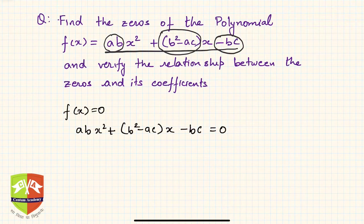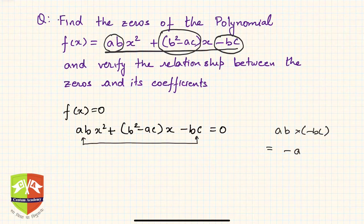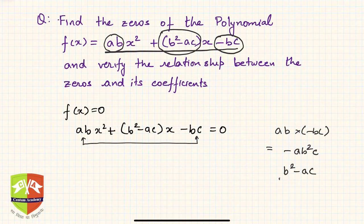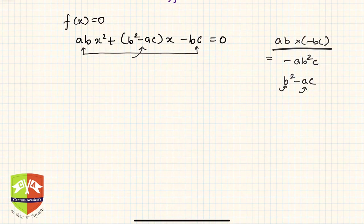We will try to split the middle term. The product of the coefficient of x² and the constant term is ab times (-bc) = -ab²c. The same result is obtained by multiplying the two split terms b² and -ac, so thankfully the split is already suggested in the question itself.